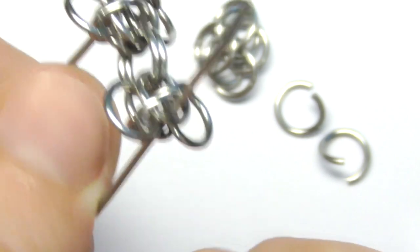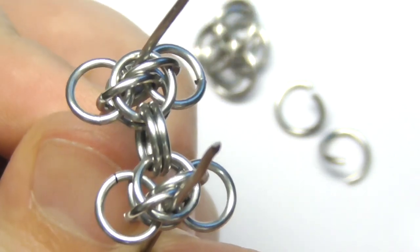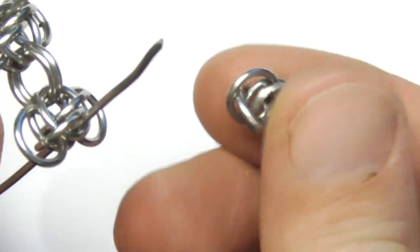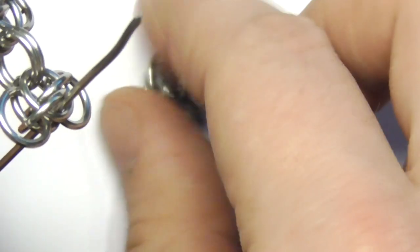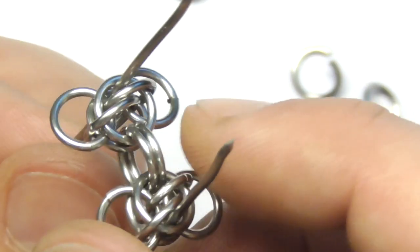Let's close it. Okay, as you can see our two elements are connected between each other and we have one element, one unit remaining and two open rings. So let's connect it.